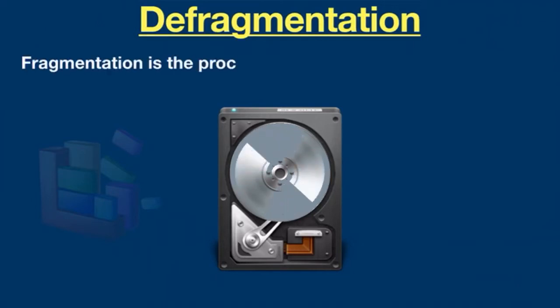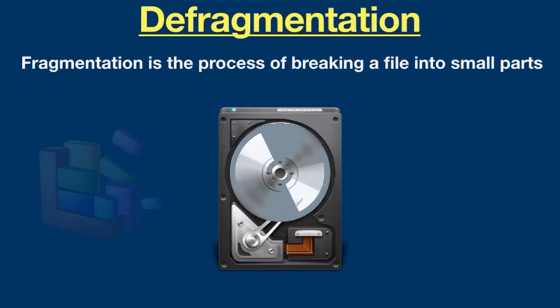Fragmentation is the process of breaking a file into small parts. It makes your hard disk do extra work that can slow down your system. More simply, fragmentation occurs when a file is broken up into little pieces or fragments and fitted on the hard disk at several different locations.